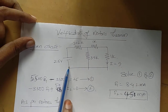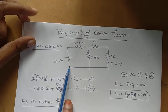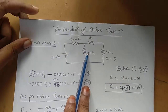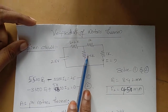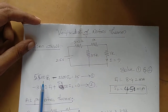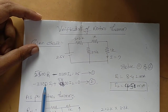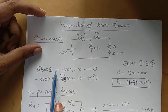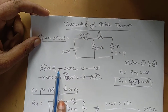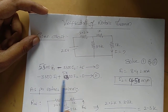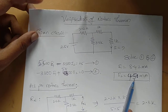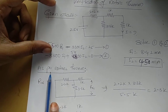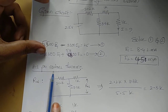For the verification of this theorem, theoretically and practically, I am considering this network here. For this network, the conventional method — mesh analysis — is used before going for the verification of Norton's theorem. As per this mesh analysis, we got load current is 4.5 milliampere. So later we go for Norton's theorem.